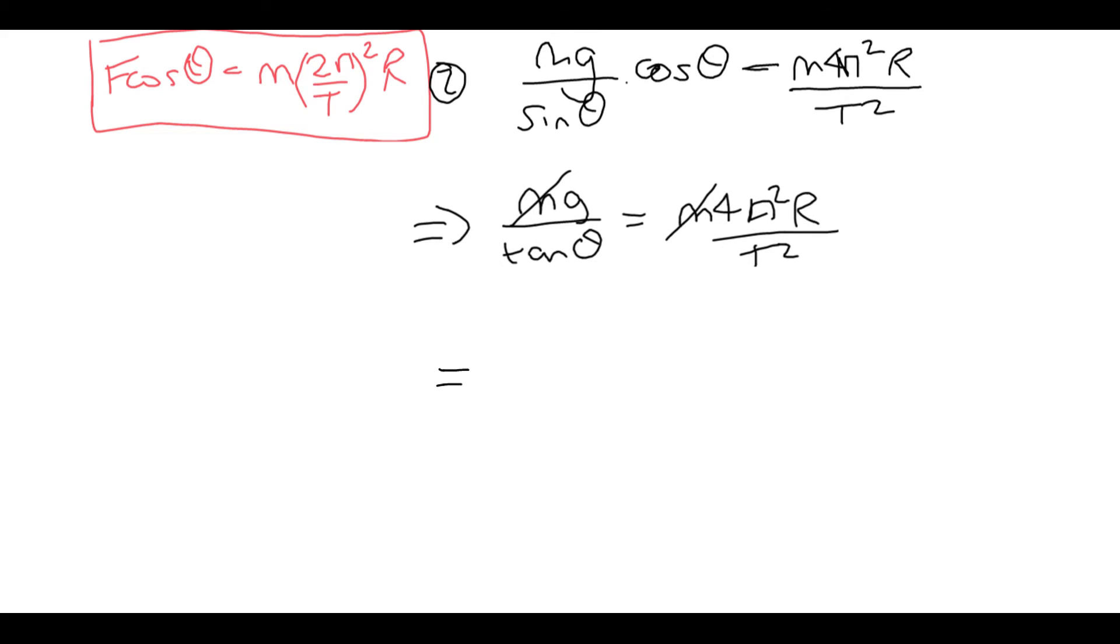So we're going to have g over the opposite. And then dividing the bottom line by something is the same as multiplying the top line, so that's why the r has gone up there.